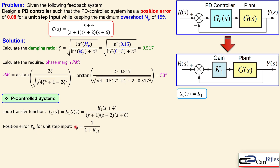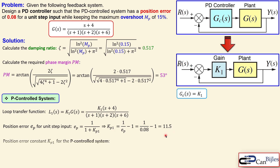The position error for a unit step input is 1 over (1 + Kp1), where Kp1 is the position error constant. The position error must be 0.08, so we calculate Kp1 = (1/0.08) − 1 = 11.5. The position error constant for the P-controlled system must therefore be 11.5.